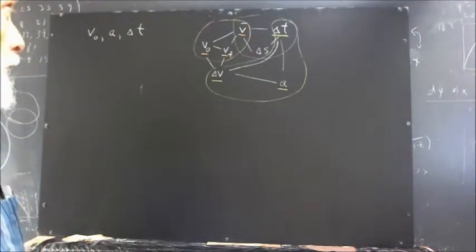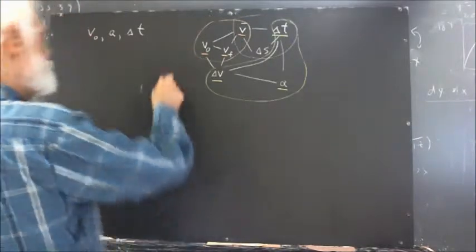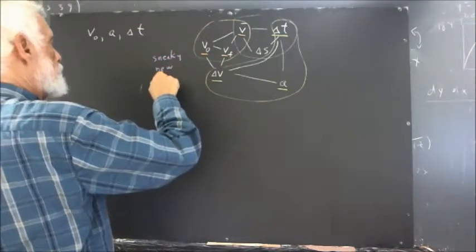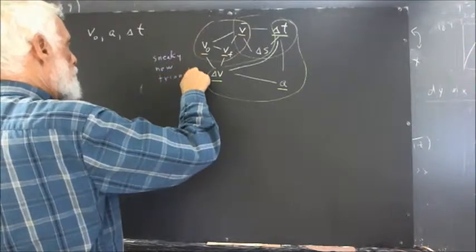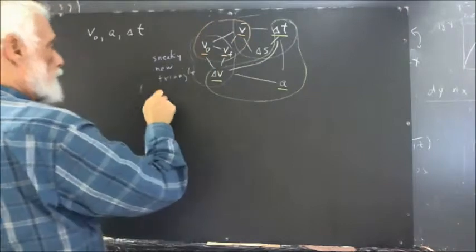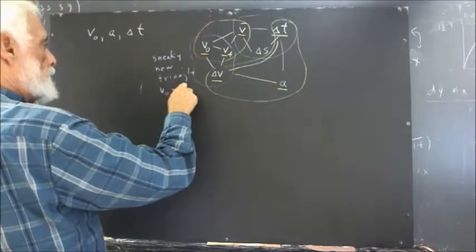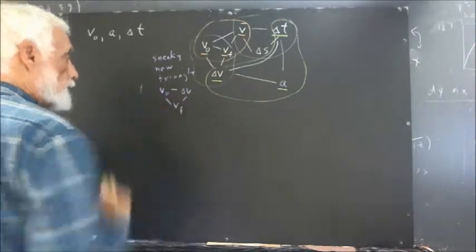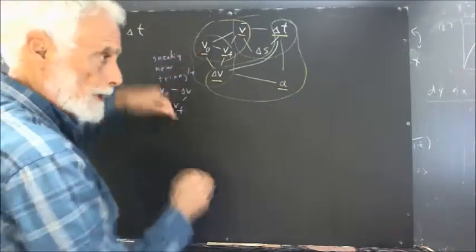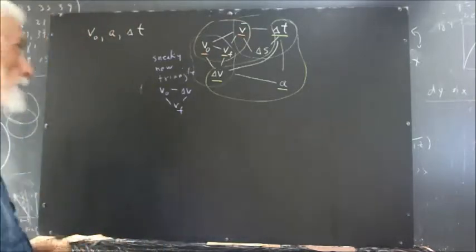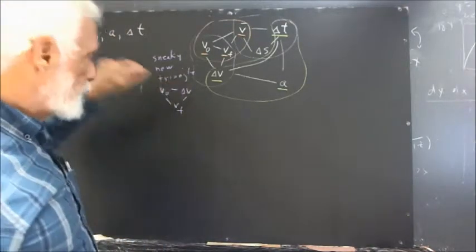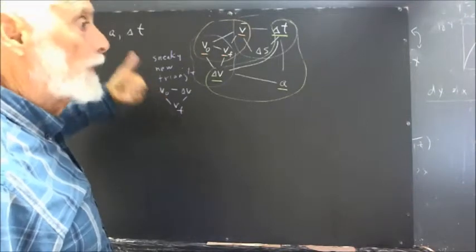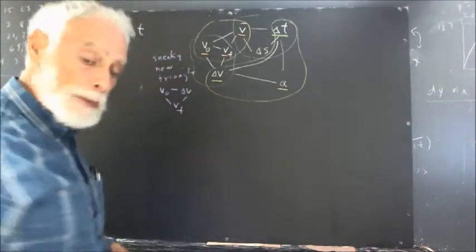I've actually sneaked in a new triangle. This is a sneaky new triangle: V naught, delta V, VF. The order in a triangle doesn't make any difference. We simply know that delta V is VF minus V naught — that's the definition of the change in a quantity, which is pretty universal.